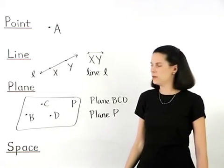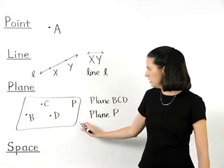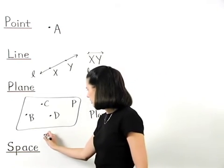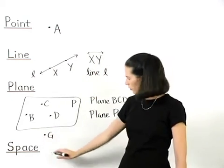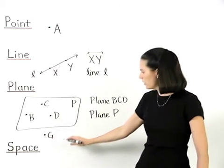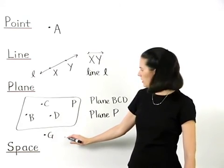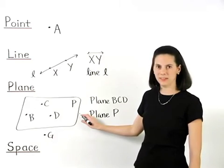If we have a fourth point not on plane BCD, such as point G, then we can introduce an idea called space. Think of point G as being below plane BCD.